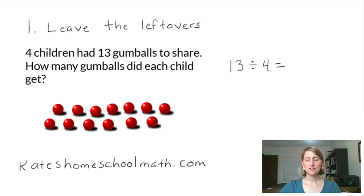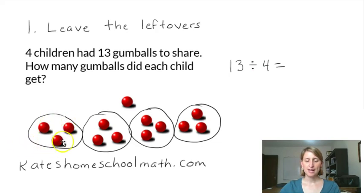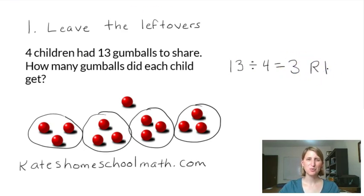Here's an example of leave the leftovers, the most straightforward way to think about remainders. Four children had 13 gumballs to share. How many gumballs did each child get? Here I have my 13 gumballs — it's the same problem as before, 13 divided by 4. So let's divide up these gumballs among four children. Each child gets three, and then there's one left. In this case, you'd probably leave the leftovers — you might give it to somebody else, give it to your mom — and the answer is just three with a remainder of one. One leftover, and there's nothing we can really do with it in this case. It's kind of a classic remainder problem.